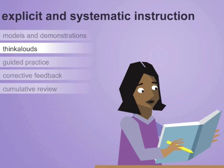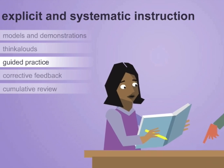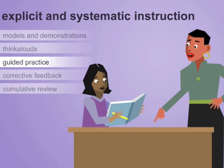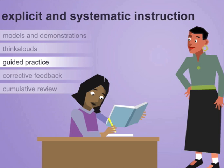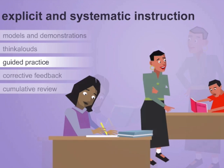Students in Tiers 2 and 3 usually need more extensive practice in solving problems, beginning with guided and scaffolded practice. Teachers and students begin by solving problems together. As students begin to master skills, they carry out more and more of the problem-solving on their own. Students are moved to independent problem-solving only when they demonstrate little need for support and are likely to experience success on their own.